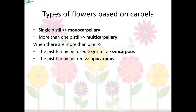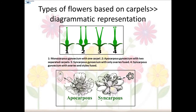When there is more than one pistil, the pistils may be fused together — those are called syncarpous — or may be free, which are called apocarpous. Diagrammatically: the first is a monocarpous gynoecium with one carpel; the second is an apocarpous gynoecium with two separated carpels; the third is a syncarpous gynoecium with ovaries fused together; and the fourth is a syncarpous gynoecium with both ovaries and styles fused.